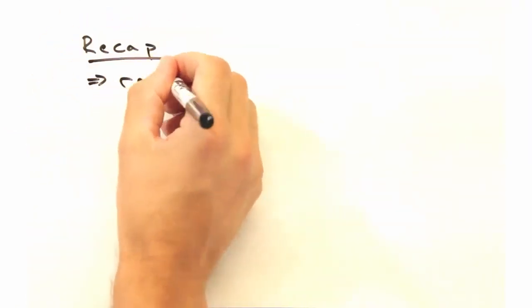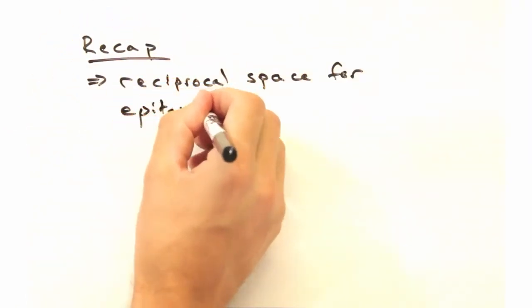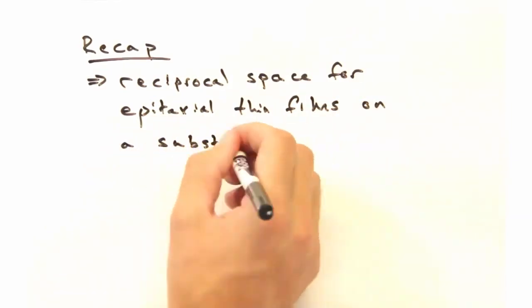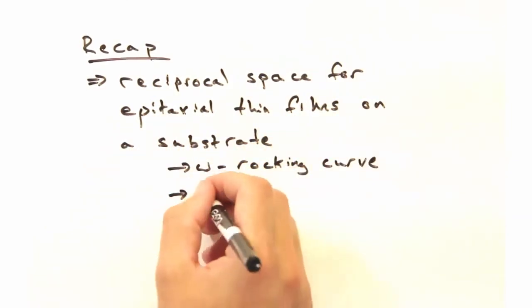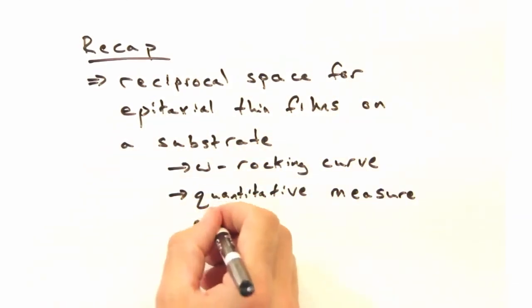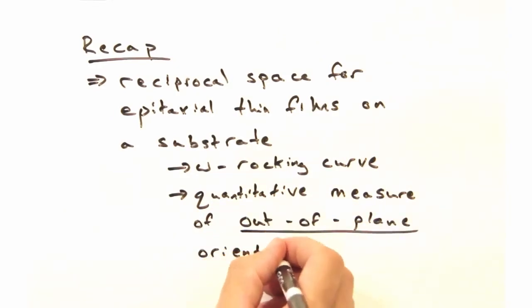So to recap, we looked at the reciprocal space for epitaxial thin films on a substrate. We then introduced the omega rocking curve, which gave us a quantitative measure of out of plane orientation.